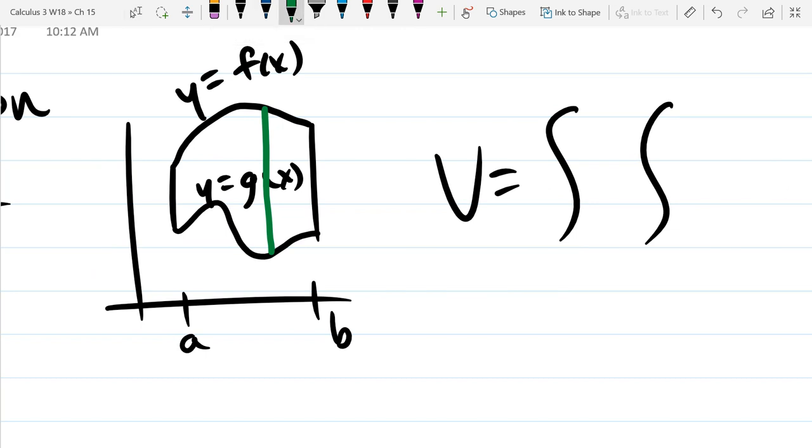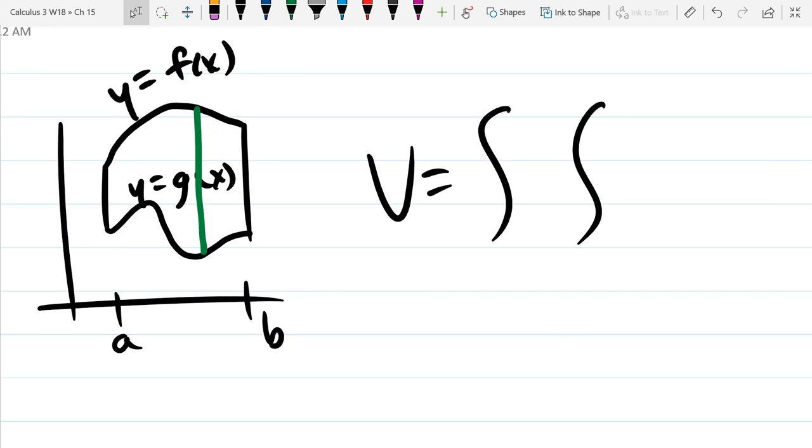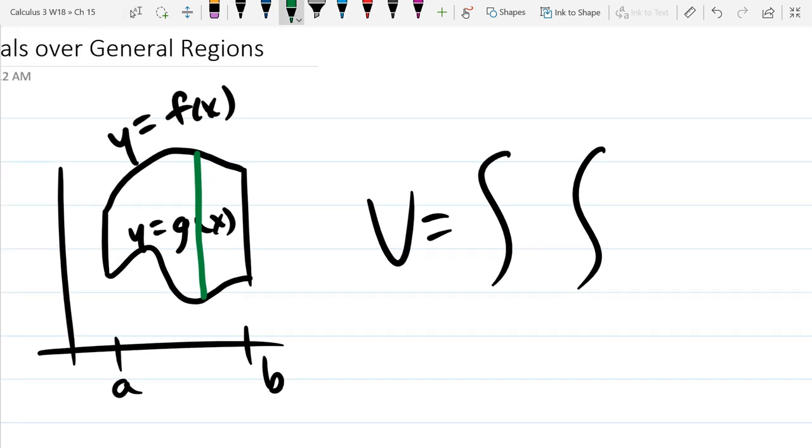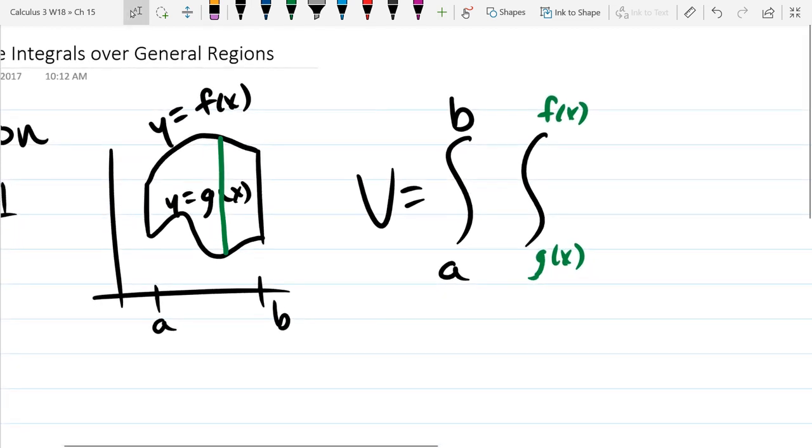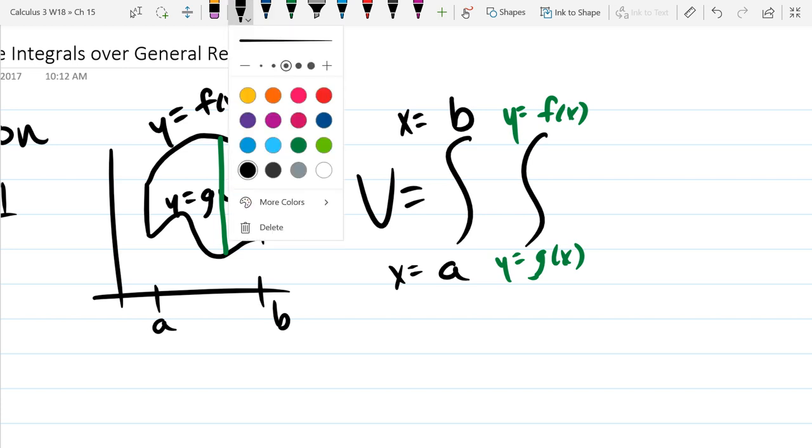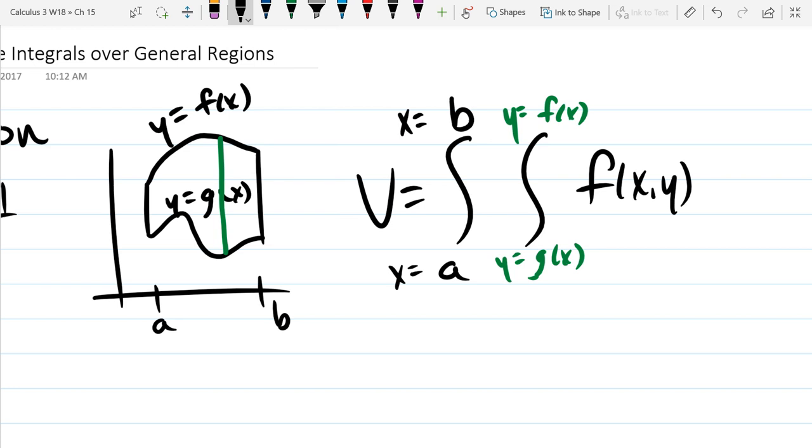So on the inside part, that means we're going to have a cross-section area going from, so our top will be f of x, our bottom will be g of x. Our outer bounds are going to be a and b, just like this. We're going to go from a to b on the x-axis. And then on the inside part, we'll go from y equals f to y equals g.